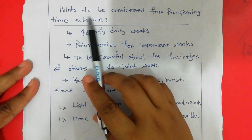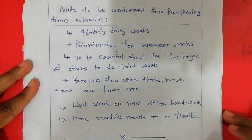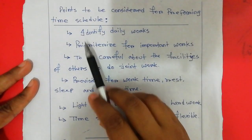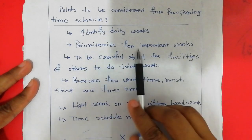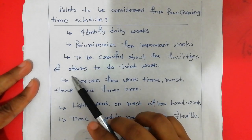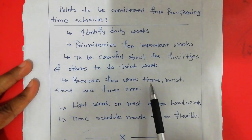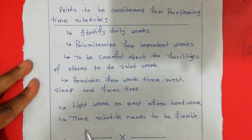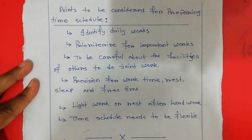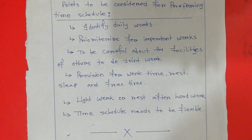It is the number three question answer: points to be considered for preparing a time schedule. First, identify daily works. Second, prioritize important works. Third, be careful about the facilities of others when doing joint work. Fourth, make provision for work time, rest, sleep, and free time. Fifth, allow for light work or rest after hard work. Sixth, the time schedule needs to be flexible.